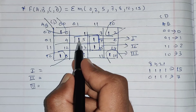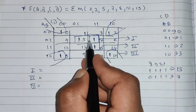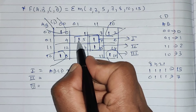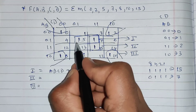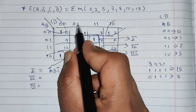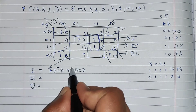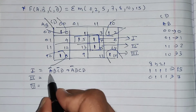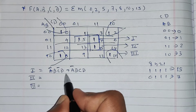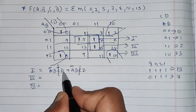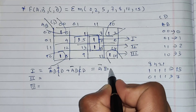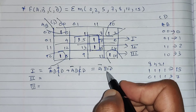In group number 1, there are 2 ones, so we write A̅BCD̄ + A̅BCD. For the first one, ABCD is 0,1,0,1, so the term is A̅BC̄D. For the second one, ABCD is 0,1,1,1. Performing cancellation: A̅ stays, B stays, but C̄ and C cancel. D stays. So from group number 1, we get A̅BD.